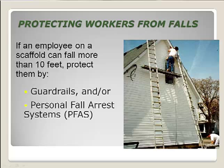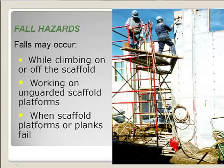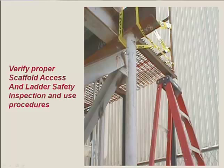To protect workers from falls: if an employee is on a scaffold more than 10 feet, protect them with guardrails and/or a personal fall arrest system — a harness and lanyard. If the scaffold is incomplete, a personal fall arrest system must be in place. Falls may also occur when climbing on or off the scaffold or working on unguarded scaffold platforms. Verify proper scaffold access; if using a ladder for access, use an extension ladder secured at the top extending three feet above the supporting platform.